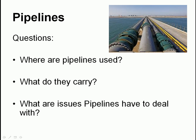Issues pipelines have to deal with: there are quite a few. The first one is obviously they need to be tight - there shouldn't be any leakage. They need to stand the test of time, so they should be reliable and last for a reasonable amount of time - maybe 40 to 50 years without a great deal of maintenance.